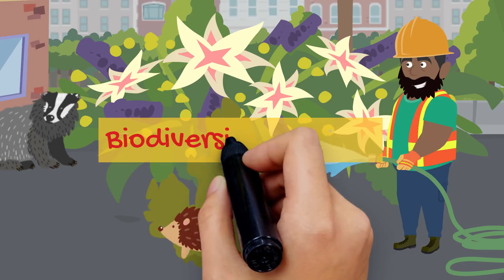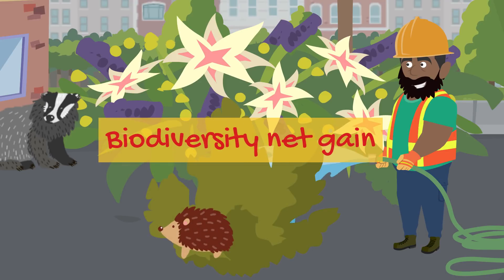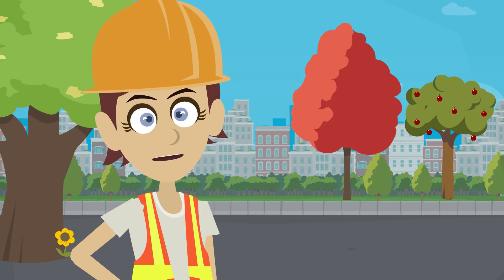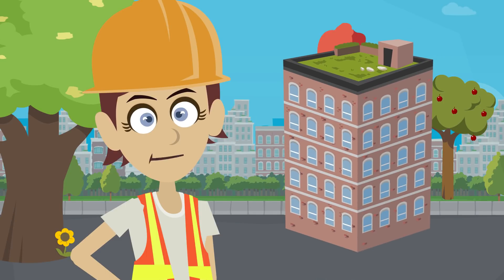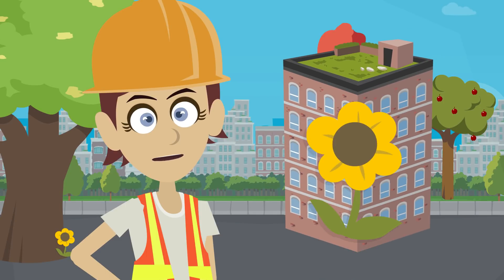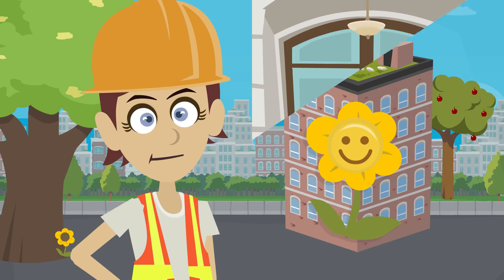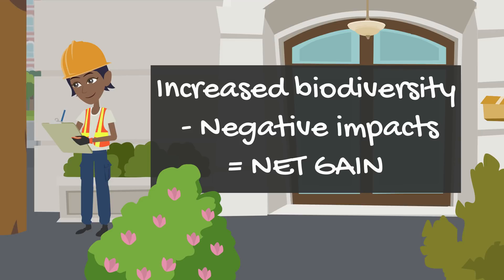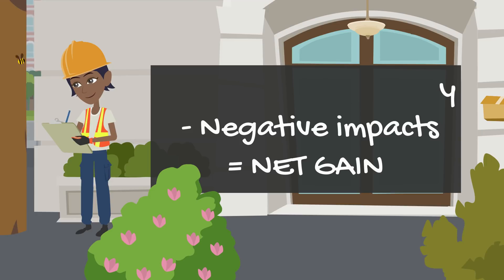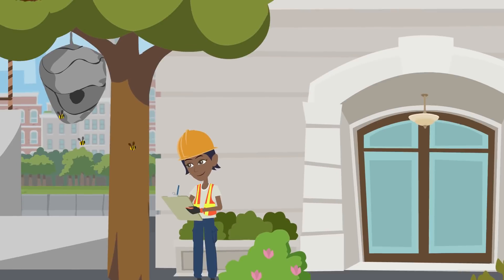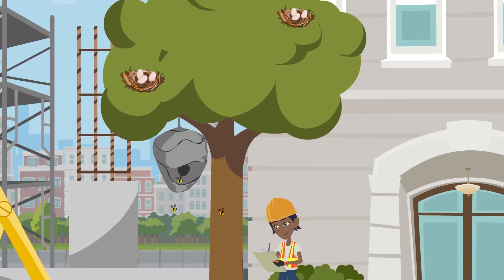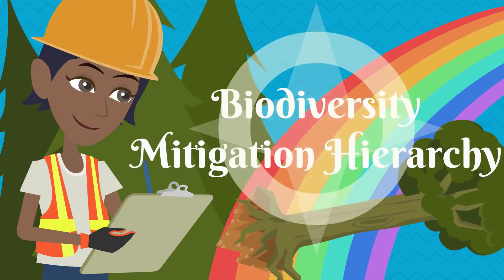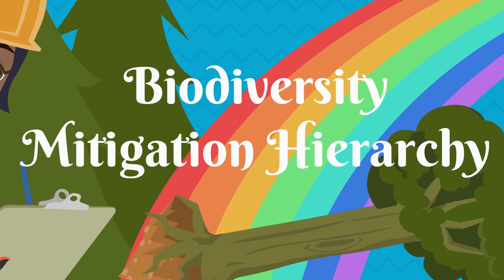This approach, referred to as biodiversity net gain, is a term used to describe how construction projects can be realised whilst achieving an overall positive impact on biodiversity. Taking a net gain is a great way for a construction project to have a positive impact on the local environment, and from the perspective of working on site you might be asked to manage impacts to biodiversity using something called the biodiversity mitigation hierarchy.